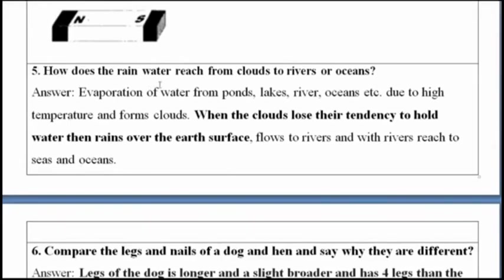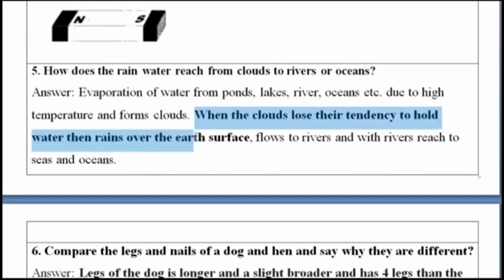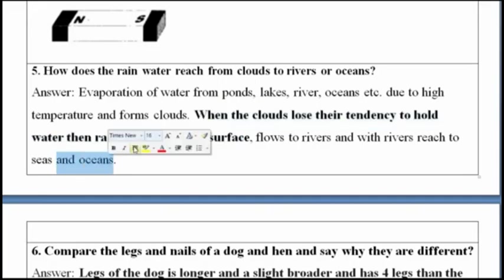Fifth question: how does rainwater reach from clouds to rivers or oceans? Evaporation of water from ponds, lakes, rivers, oceans, etc., due to high temperature, forms clouds. When the clouds can no longer hold the water, it rains over the earth's surface and flows to rivers, which then reach seas and oceans.